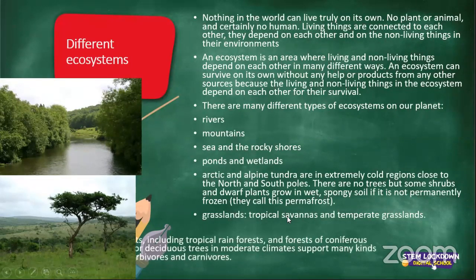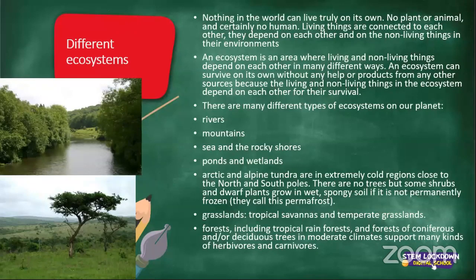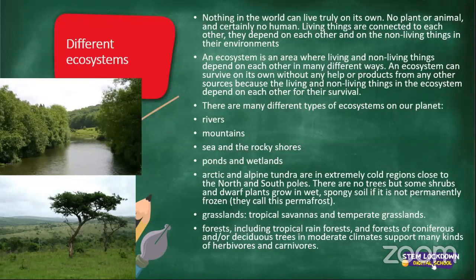There are also grasslands, which include tropical savannas and temperate grasslands. Forests, including tropical rainforests and forests of coniferous or deciduous trees in moderate climates, support many kinds of herbivores and carnivores. One of my colleagues went to a rainforest in Rwanda and she really wanted to see a live gorilla — she really enjoyed that experience. Have any of you been to a rainforest or maybe even a desert? Share with us the habitat, the weather — was it humid or cold? What animals did you see?